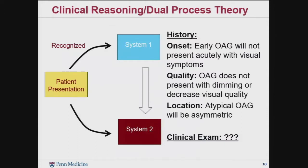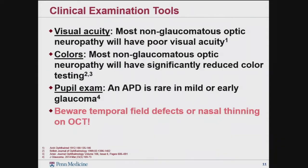There are key parts of the history that are important. Early glaucoma doesn't typically present with acute visual symptoms, and the quality of symptoms tends not to be a dimming or decreased visual acuity — yet this patient, despite the language barrier, did complain of that. I'm always leery of atypical open-angle glaucomas. The visual acuity was a red flag: most non-glaucomatous optic neuropathies, unless the patient has end-stage disease, don't present with poor visual acuity. Most non-glaucomatous optic neuropathies will have significantly reduced color testing, whereas glaucoma patients' defects tend to be more tritanous and aren't necessarily picked up on common Ishihara color plates. An APD is rare in mild or early disease, and I'm always skeptical of temporal defects or nasal thinning on OCT.